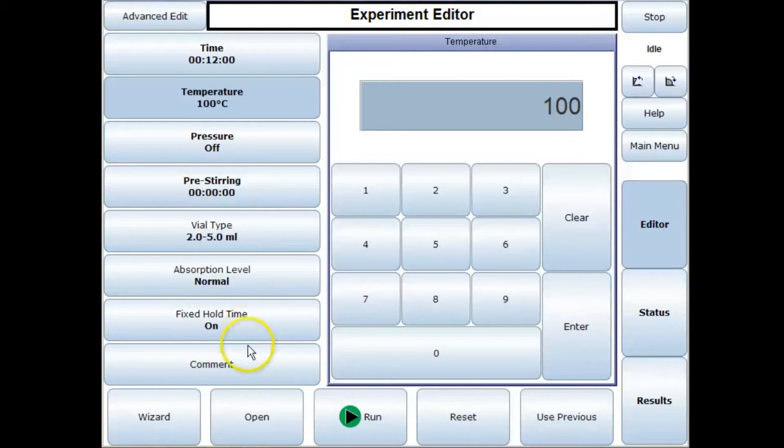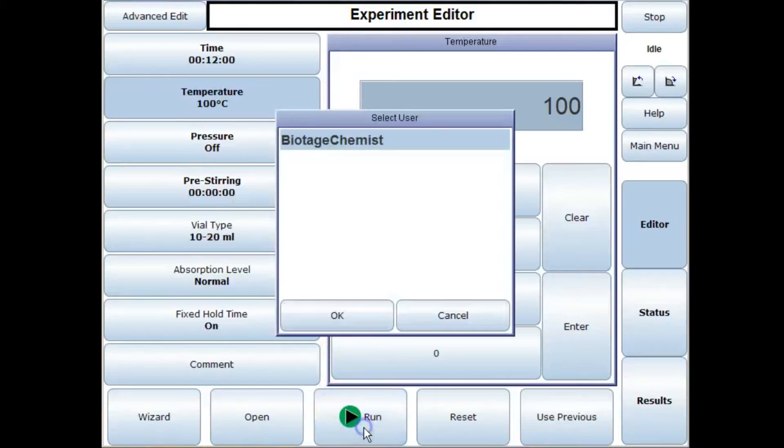A lot of these other parameters that you can set aren't necessary for each reaction, so we select our vial type, say 10 to 20 mils, and then we press go. We select our user.